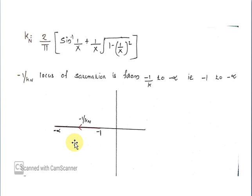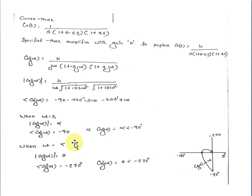Next, consider G(s). G(s) is equal to K by [s into (1 + 0.5s) into (1 + 4s)]. Substituting s equal to jω: G(jω) equals K by [jω into (1 + 0.5jω) into (1 + 4jω)].